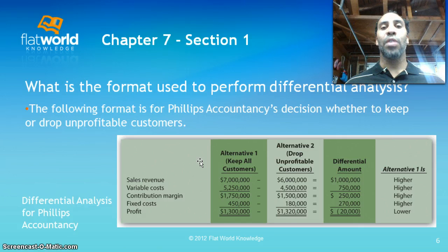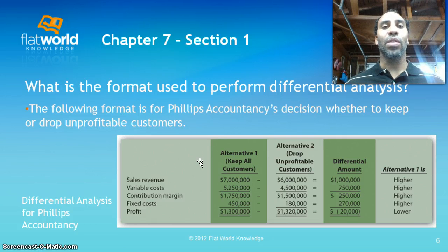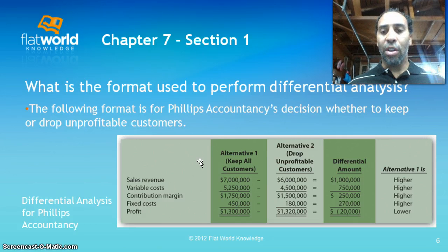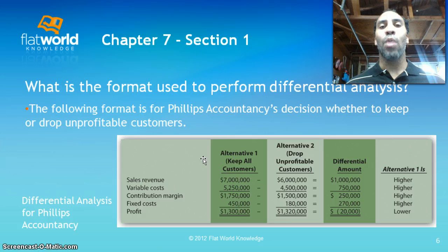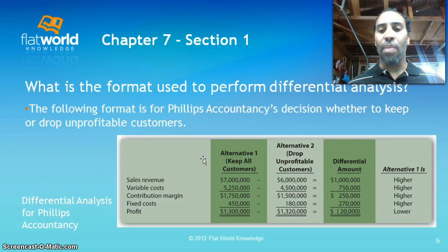Unless of course there's a qualitative reason to keep that customer — for example, a CPA who continues to refer profitable business. So you may have a couple of unprofitable clients but continue to get very profitable clients from referrals. Alternative one: keep all customers — sales revenue is $7 million, variable cost is $5,250,000, so the contribution margin is $1,750,000.